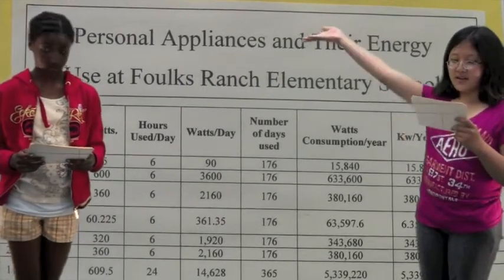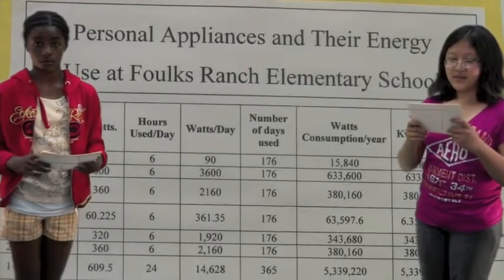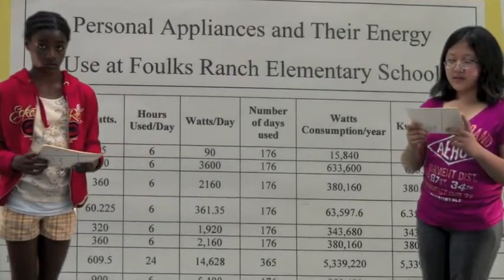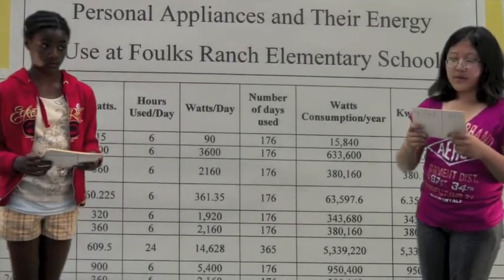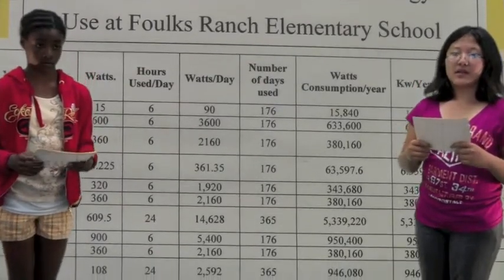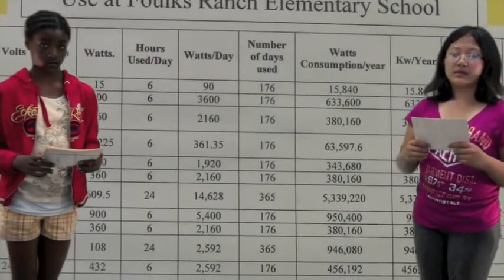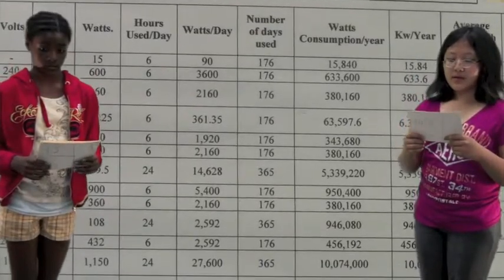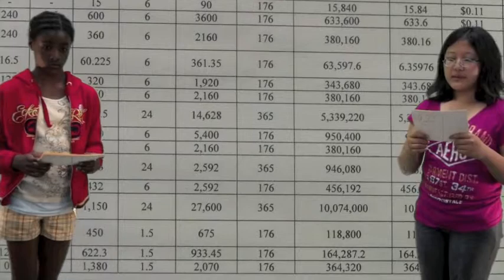This chart is an audit of electricity appliances at our school. We calculate how much money personal appliances cost per year. The mini-fridges cost about $600 per year. The staff room vending machine costs about $1,100 per year. The single microwave costs about $40 per year. And a coffee pot costs about $100 per year.